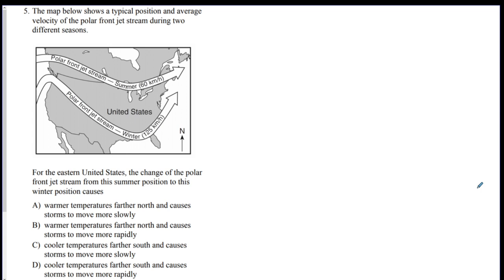Number five, from the eastern United States, the change of the polar front jet stream from the summer position, which looks like it says here, summer, to the winter position, so the jet stream moved down. What would this cause? Well, immediately you could see the wind speed went from 60 miles an hour to 125. So the storms are going to move faster if the wind is blowing further. So this one that says it's moving more slowly, that's out. This one is out. And if this polar jet stream, polar means cold, that means cooler temperatures are going to be farther south now because the whole thing moved down. So D is your best answer. Now, that question was mainly being able to interpret the picture. You really didn't have to know anything content-wise. You just had to look at the picture.